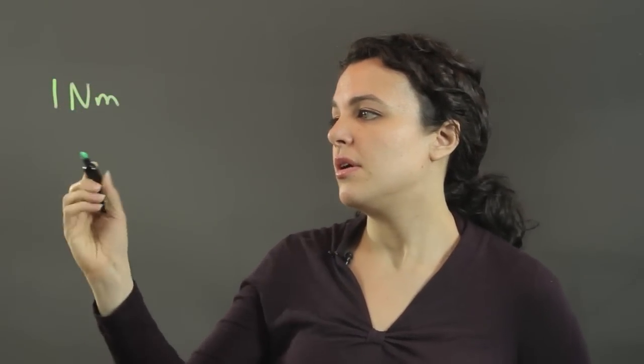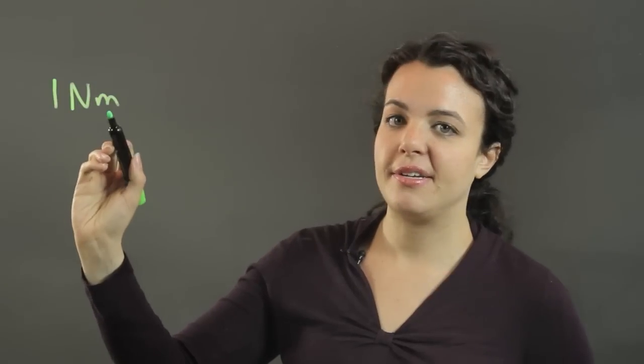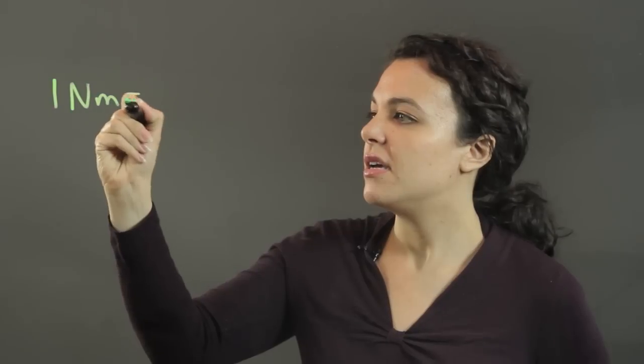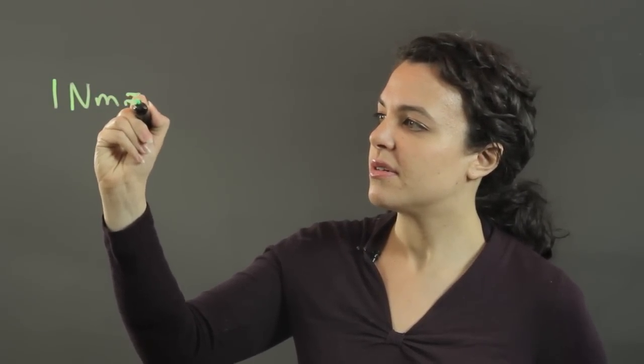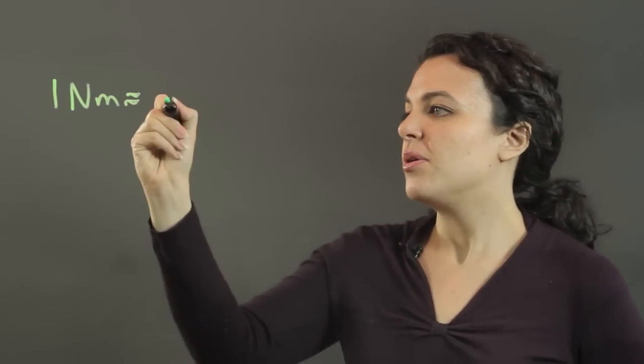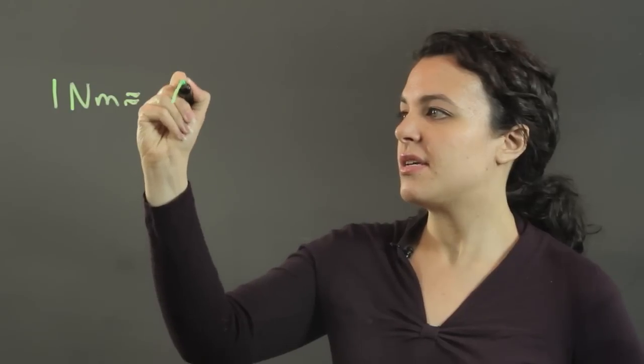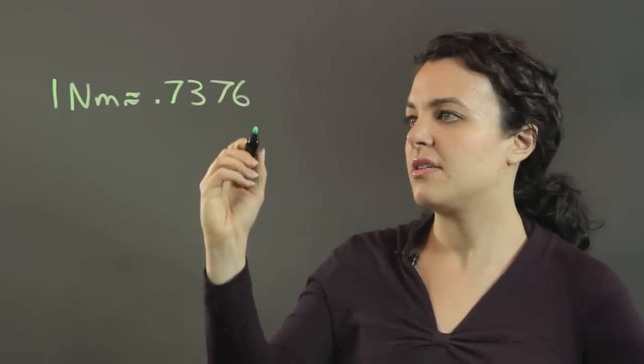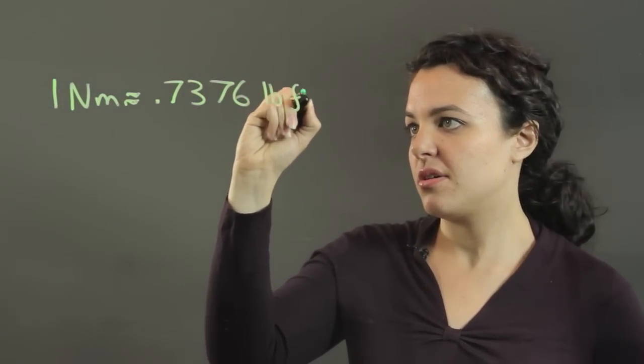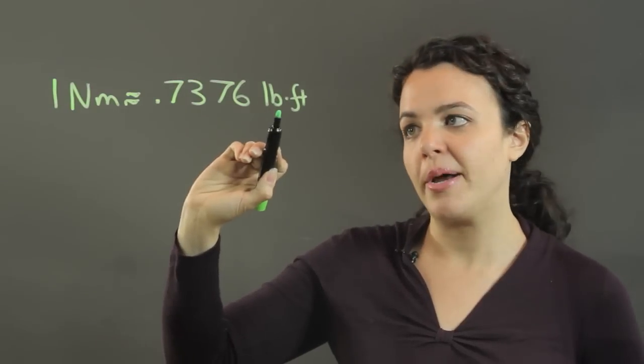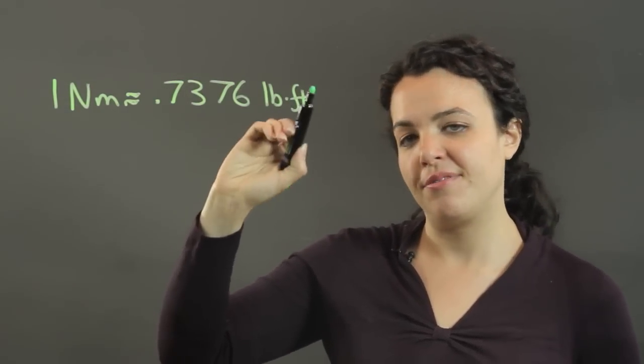So let's get started. One Newton meter, we write that as capital N and lowercase m, is equal to, it's roughly equal to, kind of rounding a little bit here, 0.7376 pounds force feet, which we write as LB for pound multiplied by FT for feet.